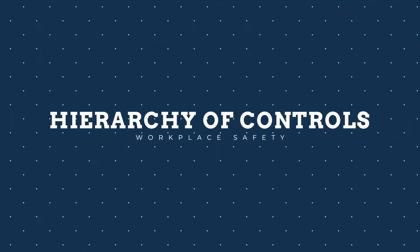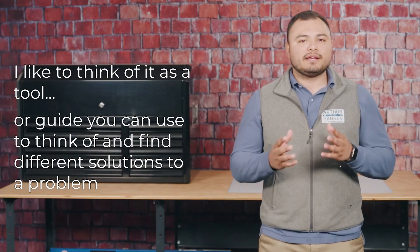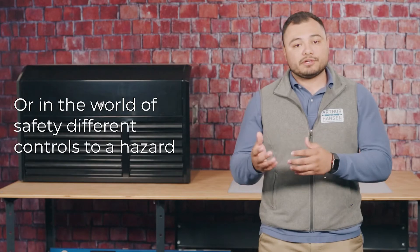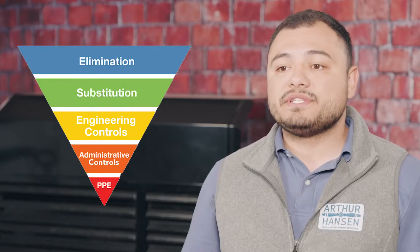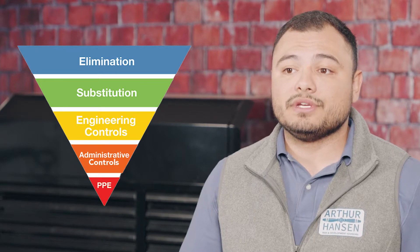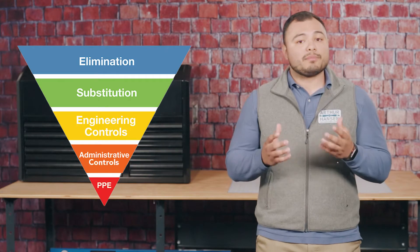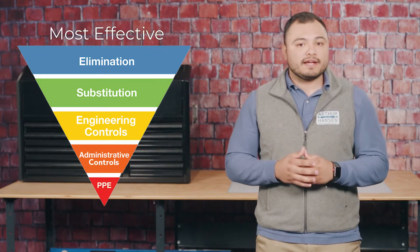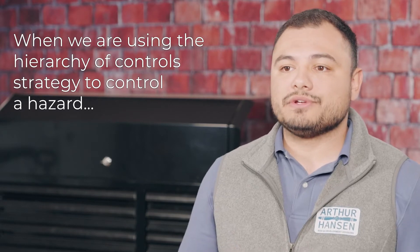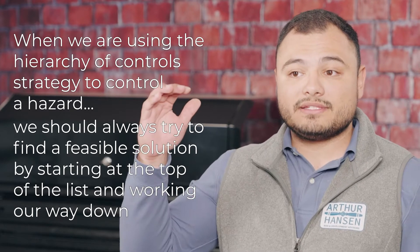Let's start off by talking about what the hierarchy of controls is. I like to think of it as a tool or a guide that you can use to think of and find different solutions to a problem, or in the world of safety, different controls to a hazard. If we look at the famous inverted triangle containing the different control methods you can use to mitigate a hazard, you will find five different approaches. These controls are listed from the most effective to the least effective, and we should always try to find a feasible solution by starting at the top of the list and working our way down.